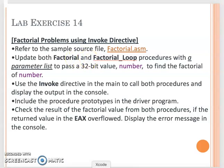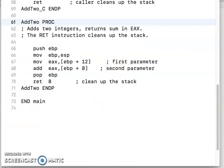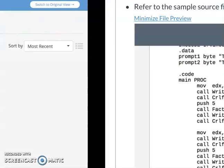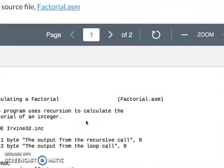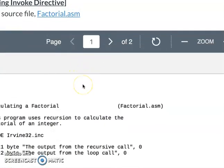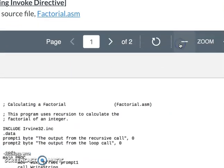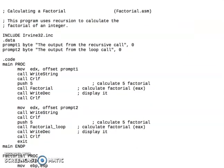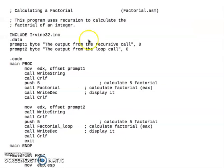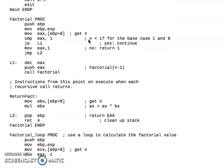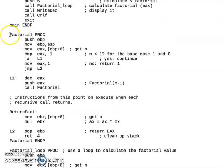That's why you'll see here from the example in the factorial.asm file. We have the factorial.asm file. In here, remember we used two procedures, but both procedures don't have the parameter list.